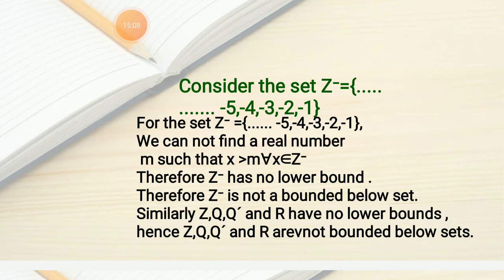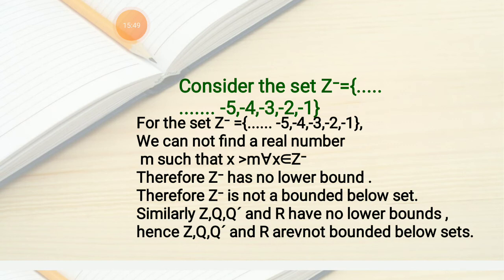Now consider Z⁻ = {..., -5, -4, -3, -2, -1}. Can we find a real number m such that X ≥ m for all X ∈ Z⁻? We cannot, therefore Z⁻ has no lower bound and Z⁻ is not a bounded below set. Similarly, Z, Q, Q', and R have no lower bounds, hence Z, Q, Q', and R are not bounded below sets.